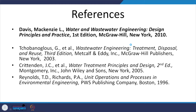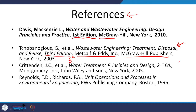What references can you look at? First, 'Water and Wastewater Engineering: Design Principles and Practice' by Davis and Mackenzie, published by McGraw-Hill — the first or Indian edition is available. Another comprehensive source is 'Wastewater Engineering: Treatment, Disposal, and Reuse' by Metcalf and Eddy — the fourth and fifth editions are now out. There is also a good source on unit operations and processes by Reynolds, which is more or less sufficient for undergraduate students.